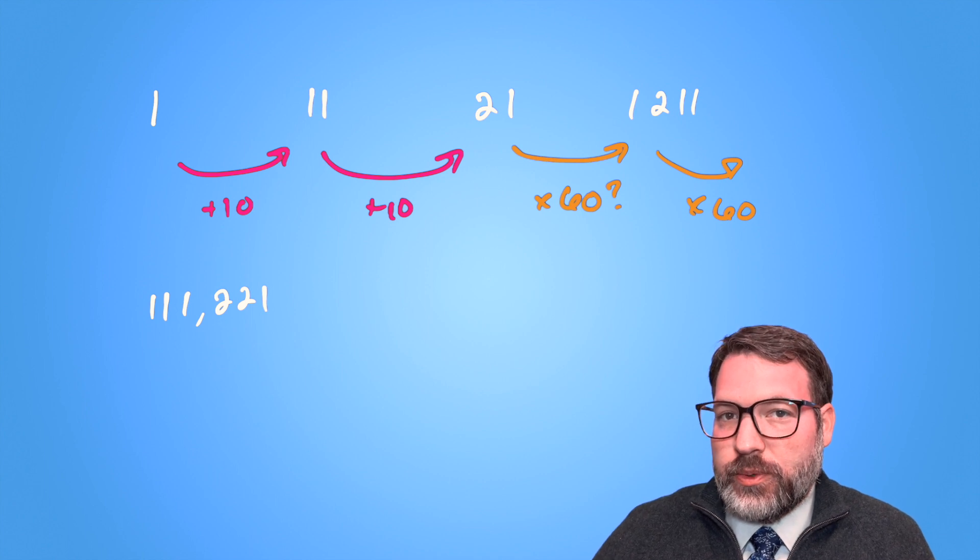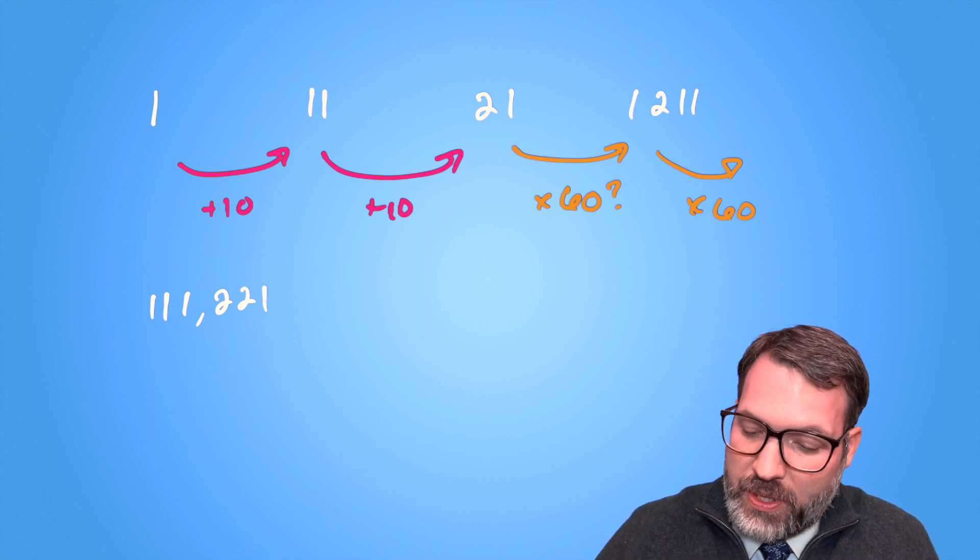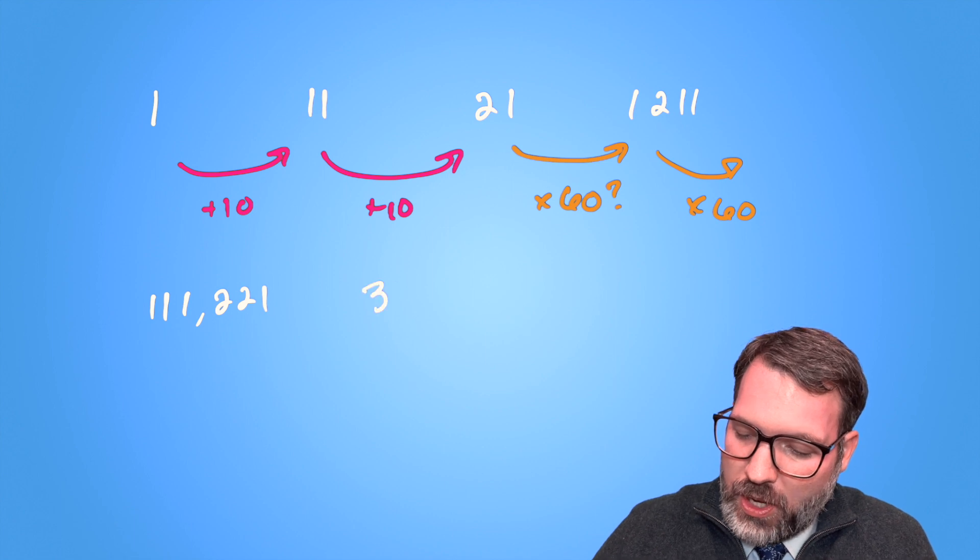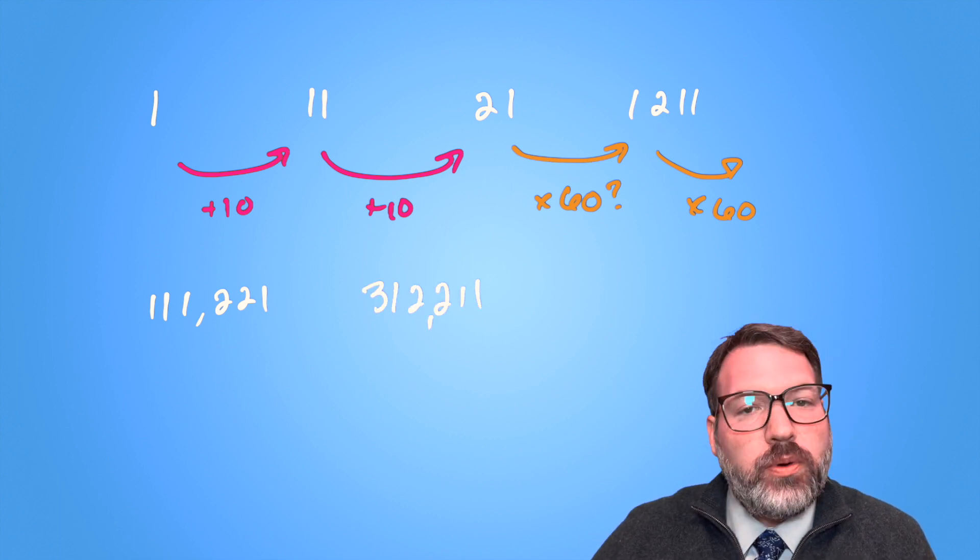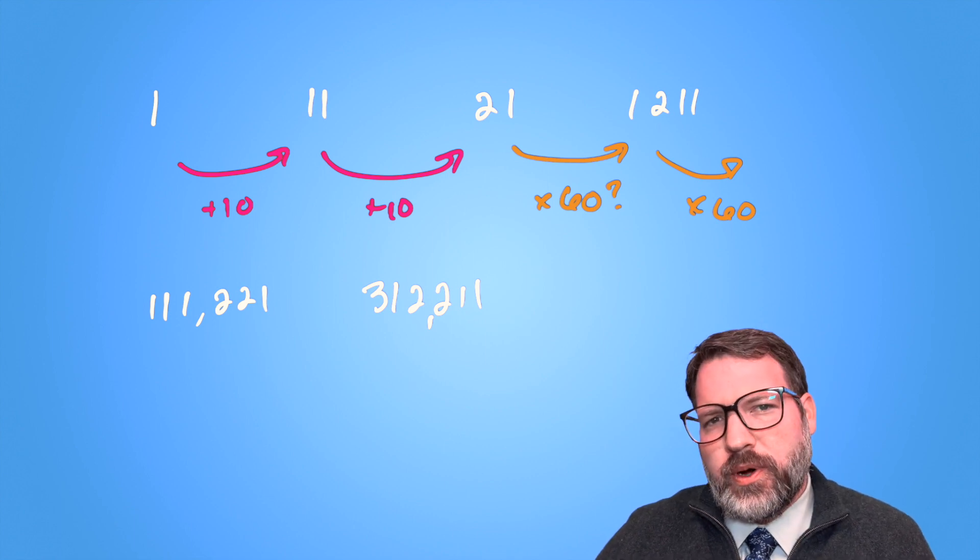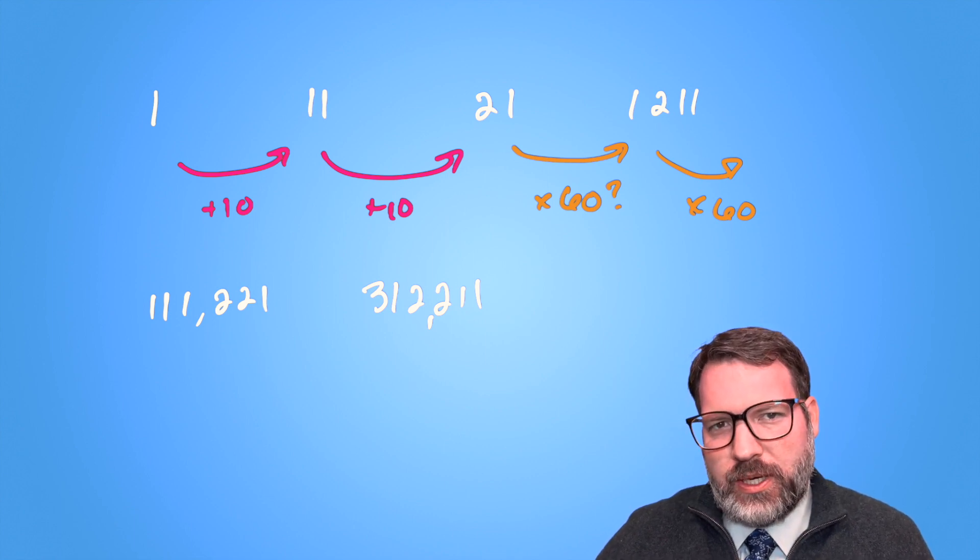What's a little bit strange, if you haven't figured this sequence out yet, is that the next term would be only about 3 times bigger than where we are right now. It would be 312,211. I don't want to give it away just yet. Take a second, pause the video if you want, see if you can think through what's happening here.